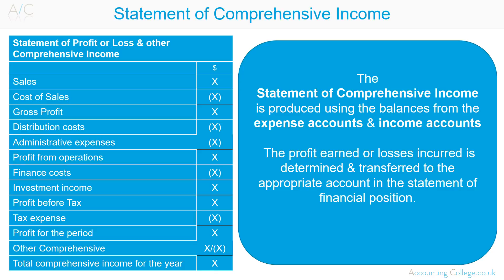International Accounting Standard 1 requires an entity to present all items of income and expense recognised in a period. It requires that there is a distinction made between items of profit and loss and items of other comprehensive income in the Statement of Profit and Loss and Other Comprehensive Income. This can be done by producing two separate statements or by combining the statements, dealing with profit or loss first and then comprehensive income.